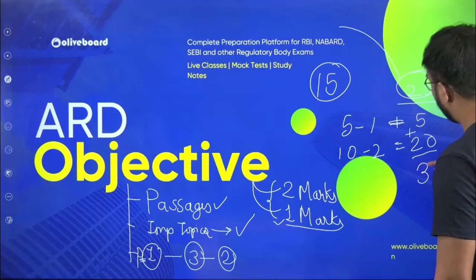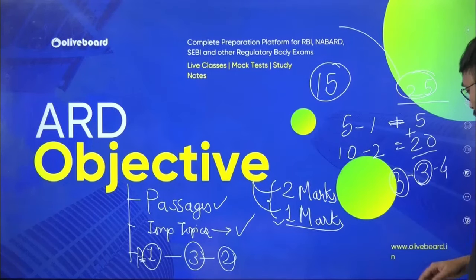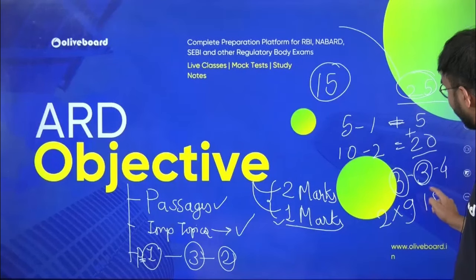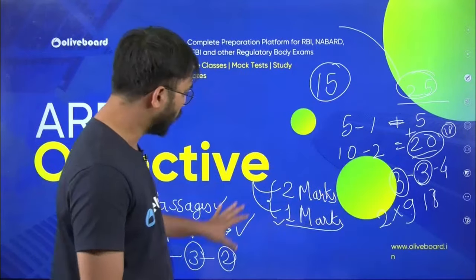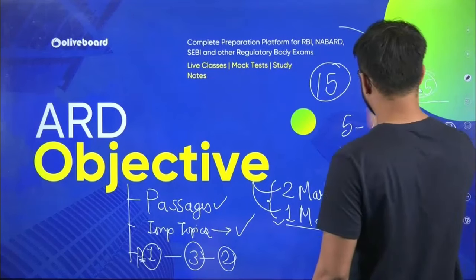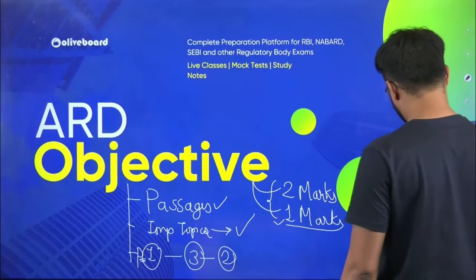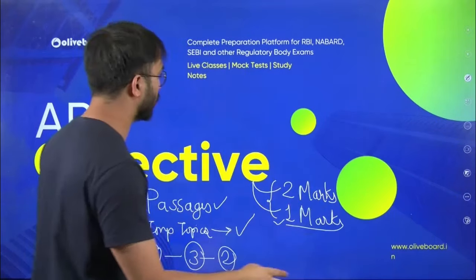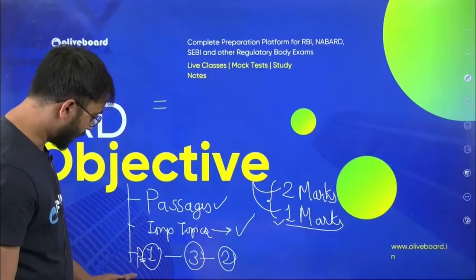If three passages are there with three questions each, that is nine questions for two marks — eighteen out of twenty marks are paragraph-based. This is a very important calculation. In Phase 2 ARD objective: 10 questions for two marks, 5 questions for one mark, total 25 marks.